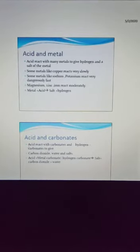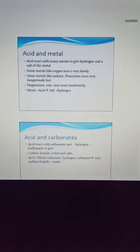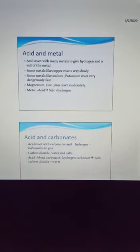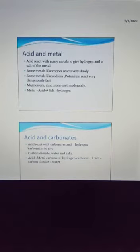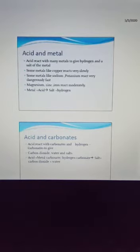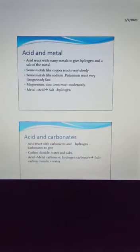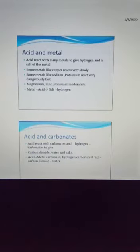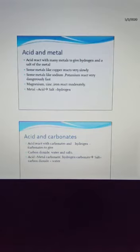Here we talk about the chemical properties of acid. First, acid and metal: how does metal react with acid? Acid reacts with many metals to give hydrogen and a salt of the metal. Some metals like copper react very slowly — less reactive. Some metals like sodium and potassium react very dangerously and fast — within seconds, heat is evolved. Magnesium, zinc, and iron react moderately. When hydrogen is evolved, it is identified by the squeaky pop sound produced when a burning splint is applied.